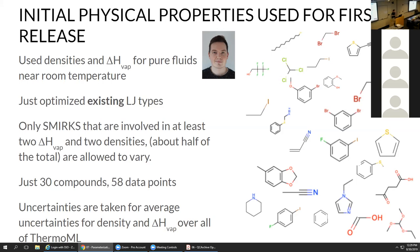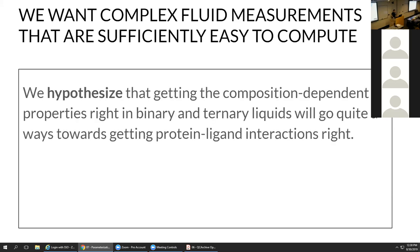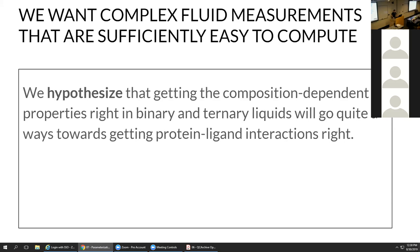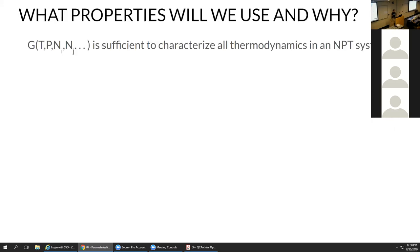For now we're taking average uncertainties for density and HVAP from ThermoML. We want complex fluid measurements that are sufficiently easy to compute. The hypothesis is that getting the composition-dependent properties right in binary and ternary liquids will go quite a ways towards getting protein-ligand interactions right — because atoms are atoms, a hydroxyl group is a hydroxyl group, and as long as you get the electrostatics right and account for chemical environment, it shouldn't matter what system it's in.